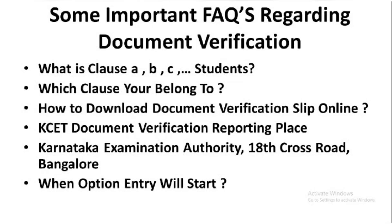How to download the document verification slip online: you have to enter your CET number and date of birth on the official link that KEA will send. In the first week of July, after the offline document verification is over, they will release the slip. Once offline verification completes, you will get your document verification slip. In that slip, you will get a secret key code — with that code you will be able to log in for option entry. In our next videos we will tell you how to do option entry.